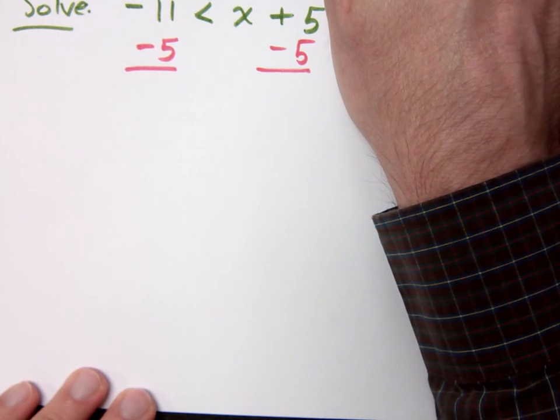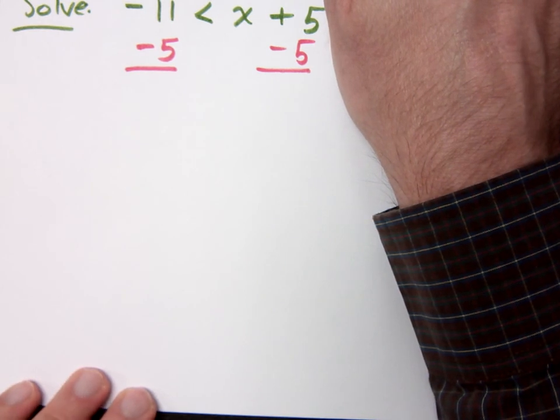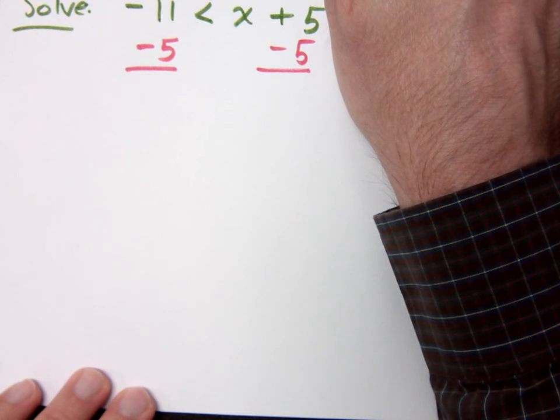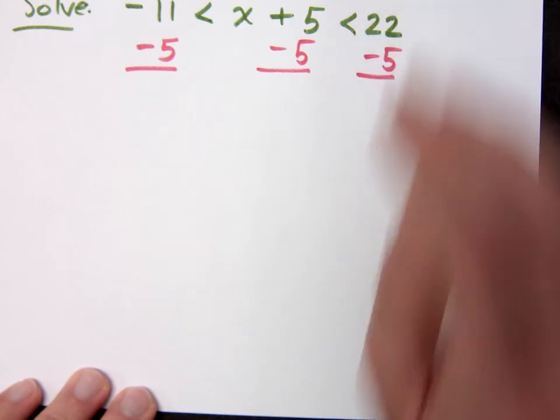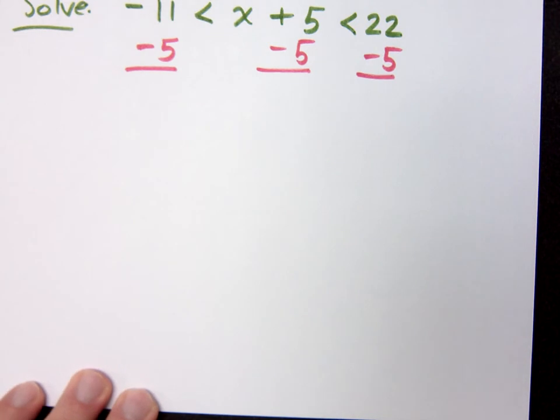And you want to keep your x in the middle. You've got to keep your x in the middle. Because if we don't, it's going to look weird and awkward and we won't have solved it the right way.